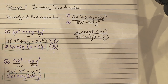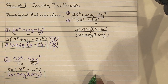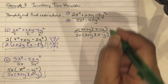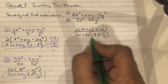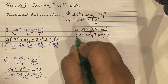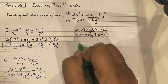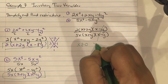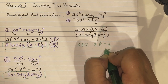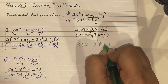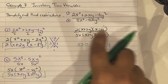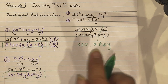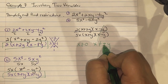Cancel x minus y from numerator and denominator. Before canceling, the denominator tells us the domain restrictions: x cannot equal 0, and x cannot equal negative y or positive y. The simplified result is 2 times x plus 2y over 5x times x plus y.